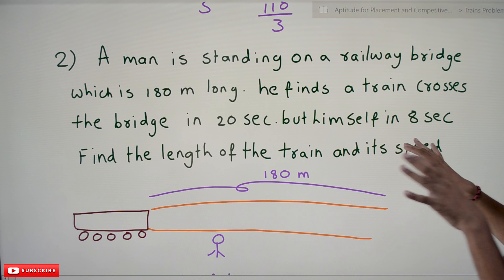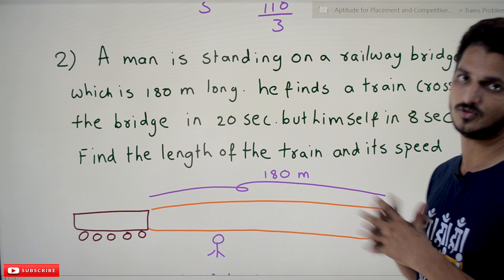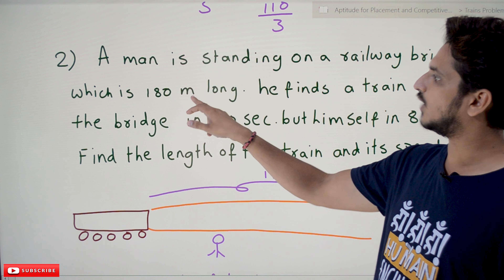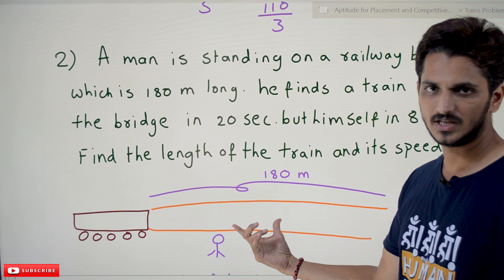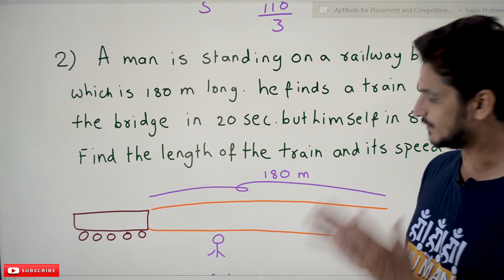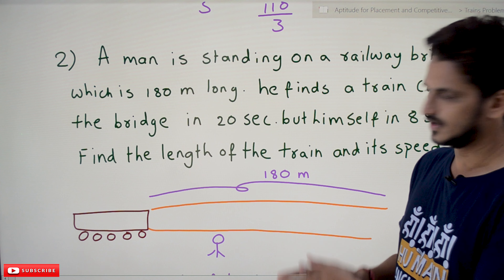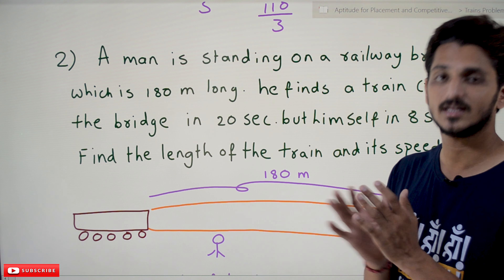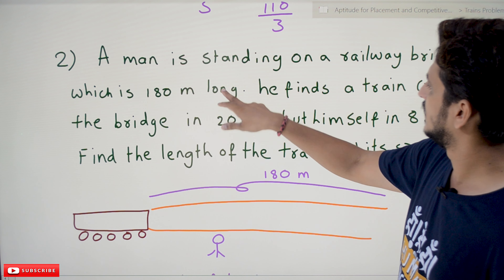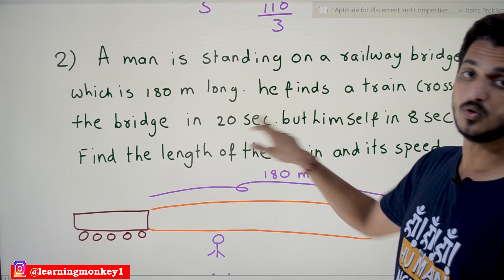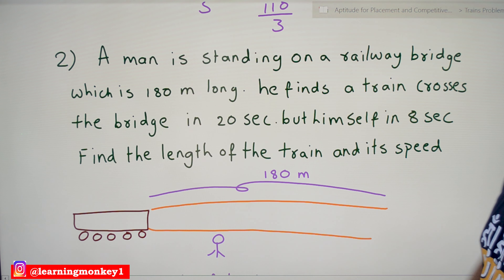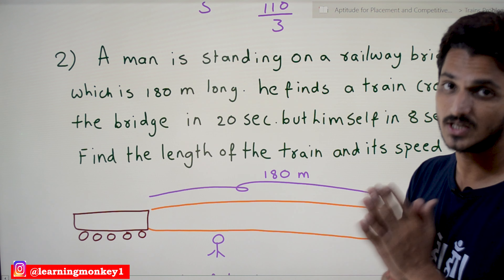Coming to the second question — this is important to understand. A man is standing on a railway bridge which is 180 meters long. He is standing somewhere on the bridge — not necessarily at either end. He finds that a train crosses the bridge in 20 seconds. What he observed is: the train started, crossed the entire bridge, and it took 20 seconds — that is what he observed.